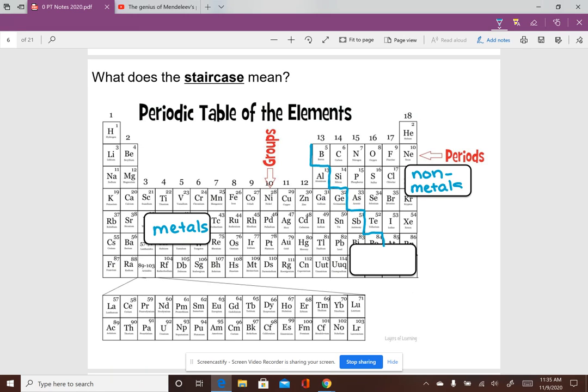And depending on if something is a metal or a non-metal, it has very specific properties or characteristics. So just knowing where something is on the periodic table, the fact that it's to the left of this staircase, you know it's a metal, you know it has to be shiny and a good conductor, even if you've never seen it or heard of it before.